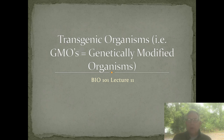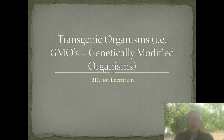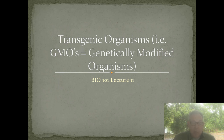I want to continue along with our current theme, which is applying what we know about protein synthesis and genetics to give some modern real-world examples. I'm thinking about things that a student in Bio 101 might have heard about, or a non-biologist might have experience with, and try to help you understand these things in a little bit better detail. So we're going to talk about transgenic organisms - you might be more familiar with the term GMO, genetically modified organism.